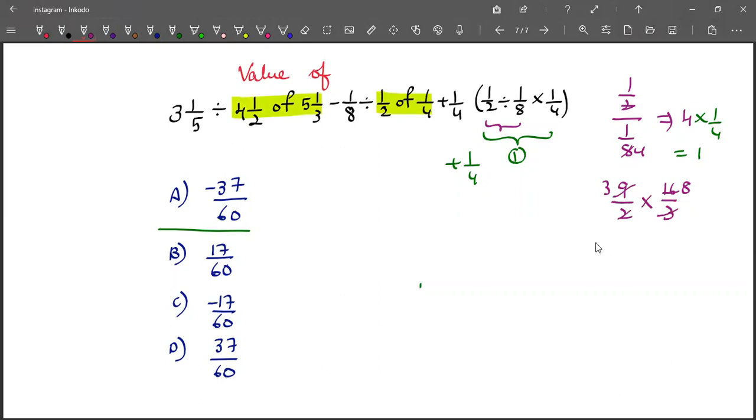And this becomes 24 minus 1 by 8 divided by, how much is 1 by 2 of 1 by 4? 1 by 8. And this is 3 1 by 5, which is 16 by 5. Okay.